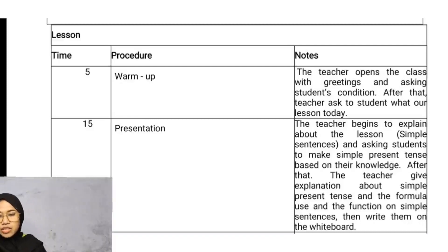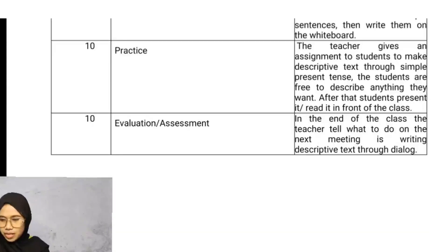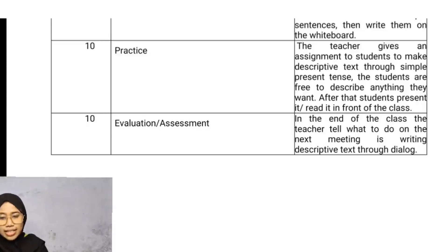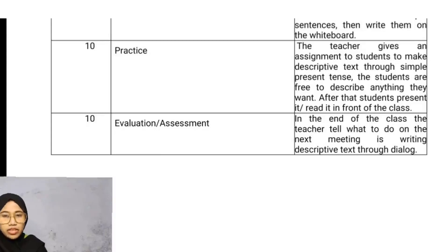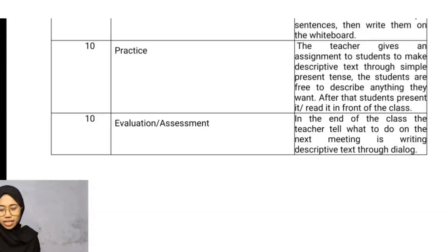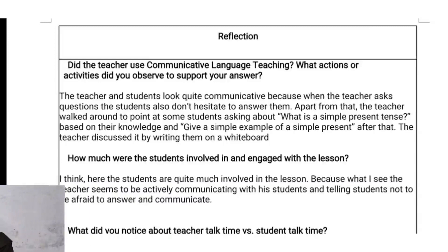The teacher writes them on the whiteboard. Next, 10 minutes for practice — the teacher gives an assignment to students to make descriptive text using simple present tense; students are free to describe anything they want and then present or read it in front of the class. For the last, 10 minutes for evaluation — at the end of the class the teacher tells students what to do at the next meeting, which is writing a script text based on their own opinions.